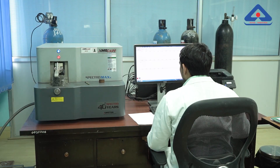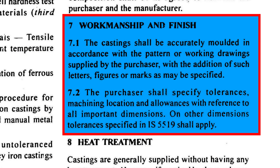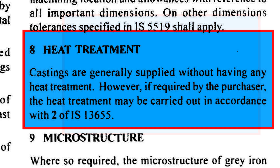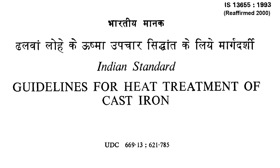Clause 7 of IS-210 talks about workmanship and finish of the casting. The quality of workmanship and finish is a cornerstone of the casting process, ensuring the product meets technical, functional and aesthetic requirements. Heat treatment is a critical and flexible process used to ensure the performance, durability and lifespan of castings. According to Clause 8 of IS-210, castings are generally supplied without heat treatment; however, if heat treatment is necessary, it should be performed in accordance with IS-13655.